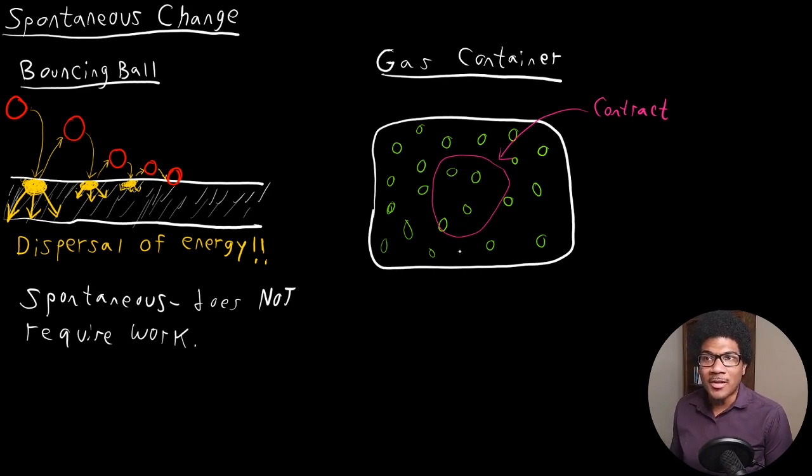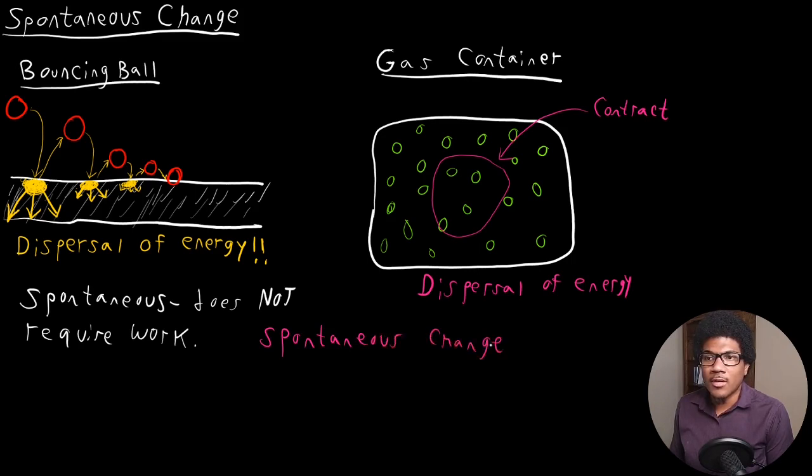The gas molecules are more naturally going to disperse. So here again, we see a dispersal of energy, just like we do with the bouncing ball. So really what we've kind of identified here in these two examples is the direction of spontaneous change. And it seems that the direction of spontaneous change is toward dispersal of energy. So spontaneous change, I will say favors dispersal of energy.